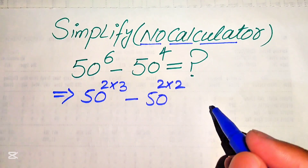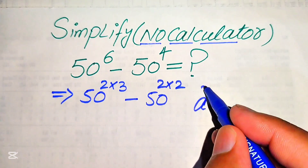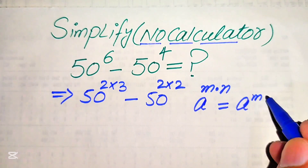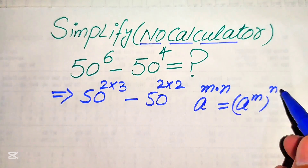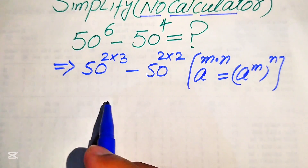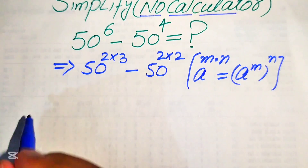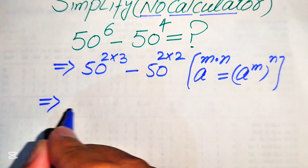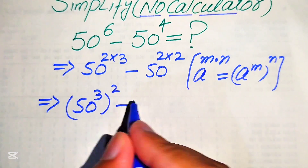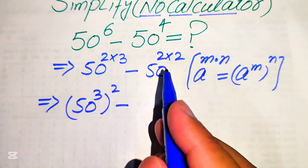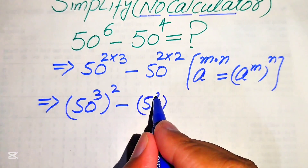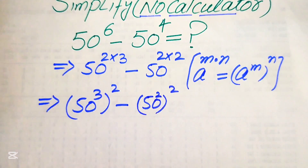In the next step we apply the exponent law: if we have a to the power of m multiplied by n, we write it as a to the power of m, to the power of n. According to this law, we move the 3 inside the term and it becomes 50 cubed whole squared, and we move the 2 inside and it becomes 50 squared whole squared.